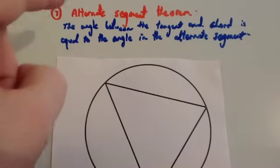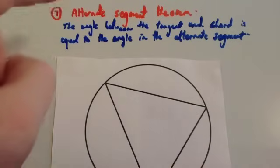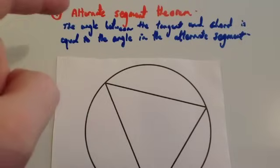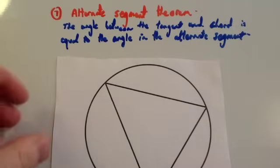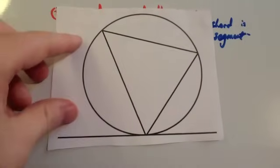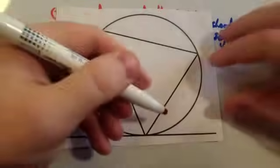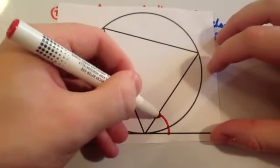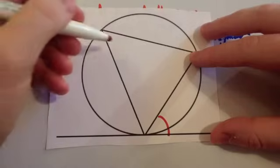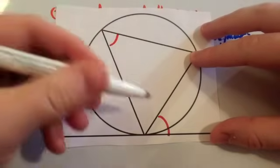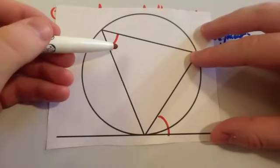The circle theorem number seven is the alternate segment theorem. The alternate segment theorem is that the angle between the tangent and the chord is equal to the angle in the alternate segment. So look at this diagram. The angle between the tangent and the chord, this angle, is equal to the angle in the alternate segment. So this angle would be equal to this angle.